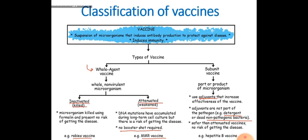Subunit vaccine mein a part is taken — part ya product of microorganism. Pura microorganism nahi liya jata. Whole agent mein uska kuch part liya jata hai, woh part jo disease na cause kare. That increases effectiveness of the vaccine. Adjuvants are not part of the pathogen. Safer than attenuated vaccine — no risk of getting disease.